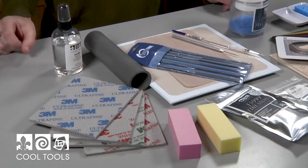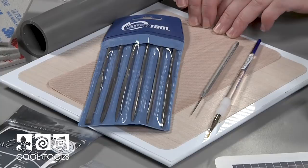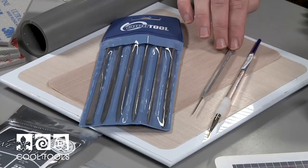I also have some sanding sponges, sanding pads, cool slip, a clay roller, a work surface, an extra Teflon work surface, some needle files, an ultra clay pick, and a brush. Let's get started.